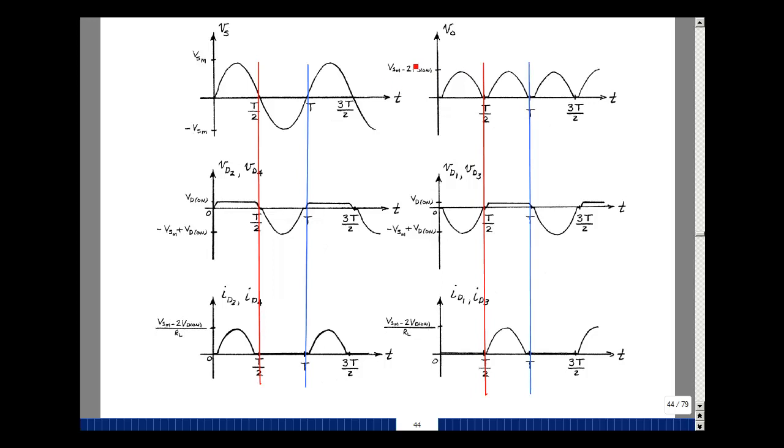Now the current that flows in two and four is the same as the current that flows in R sub L. Just take this and divide by R sub L, and you'll get the current. Initially it's zero, but we'll eventually go up to the peak of the input minus two diode drops divided by R sub L. What about diodes one and three? Well, they're off, so there's zero current. There is a voltage across diodes one and three. Let's see if you can figure that out.